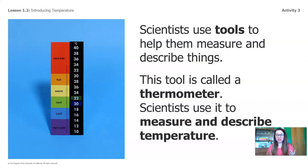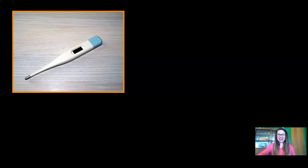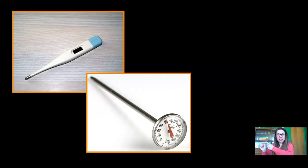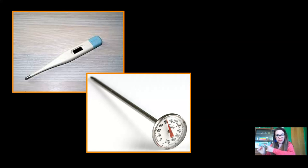Scientists have a way to help solve problems like this. They use tools to help them measure and describe things. This tool in the picture is called a thermometer. Scientists use it to measure and describe temperature. Have you ever heard of a thermometer before? Sometimes when I was a little girl and I felt sick, my grandma would put a thermometer into my mouth to take my body's temperature. This type of thermometer is used to measure food — you can stick it into hamburgers or meat or different types of food to see if it's cooked to the right temperature.